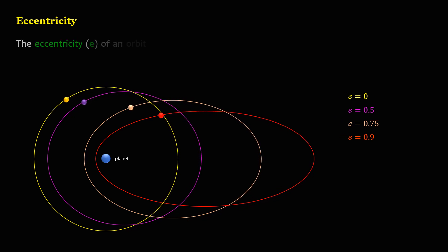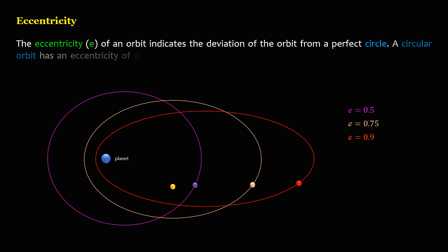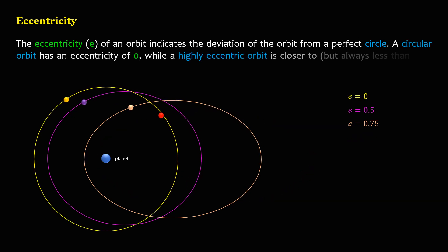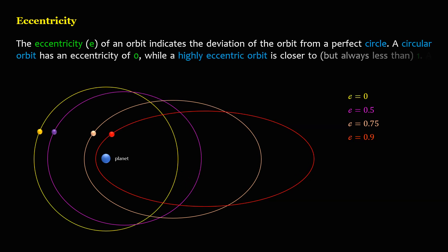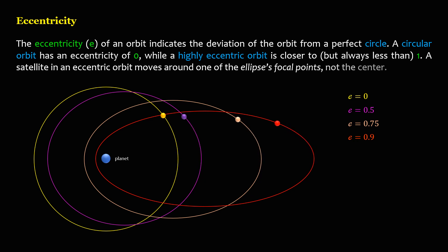The eccentricity, E, of an orbit indicates the deviation of the orbit from a perfect circle. A circular orbit has an eccentricity of zero, while a highly eccentric orbit is closer to, but always less than, one. A satellite in an eccentric orbit moves around one of the ellipse's focal points, not the center.